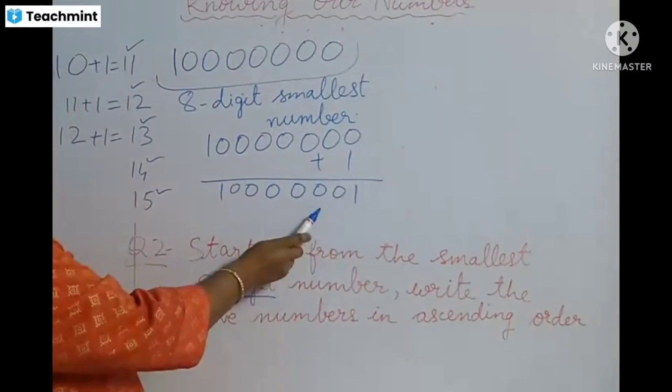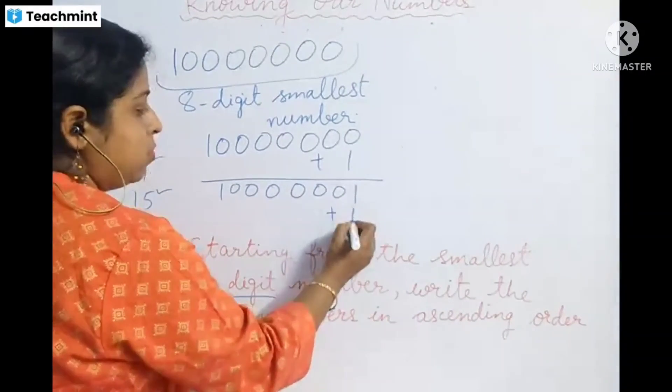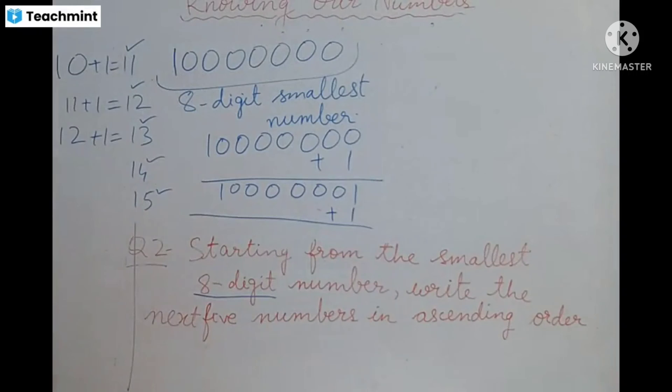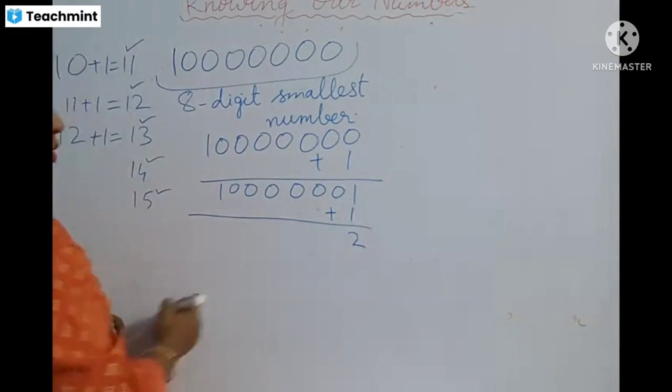You have to get the first number. This is your first number. Second number you have to find out. Then you have to get the first number. 1 plus 1, 2.